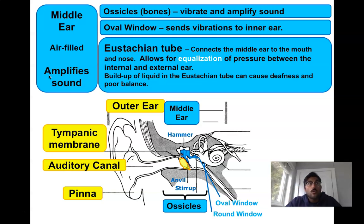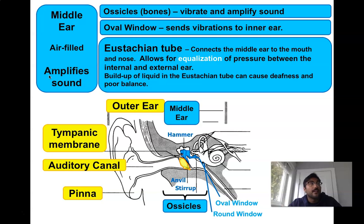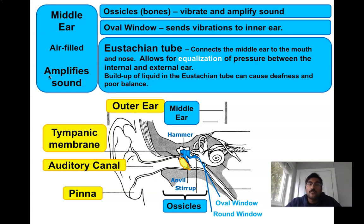If you've ever had a bad cold and your ears hurt, your throat hurts, your eyes are watering, your nose hurts — now you know what your eustachian tube feels like. When you have a build-up of fluids in the eustachian tube you could have poor balance, and you could have deafness as a result.